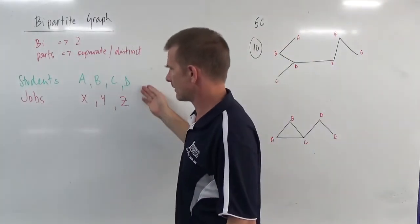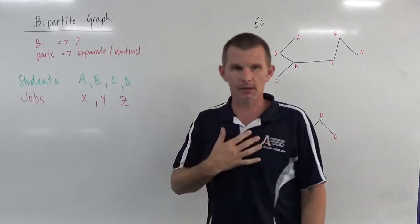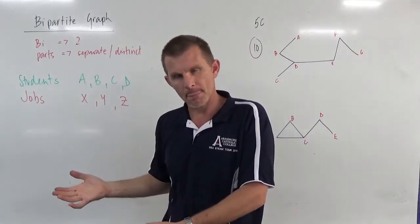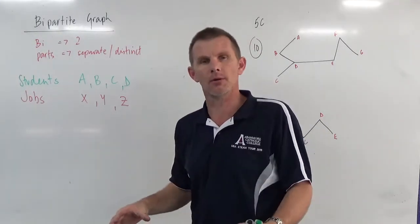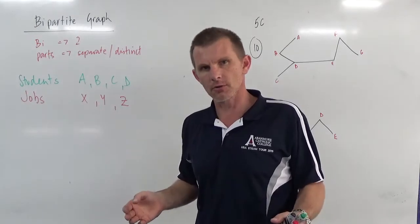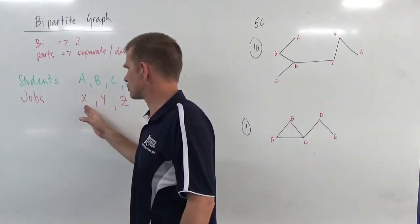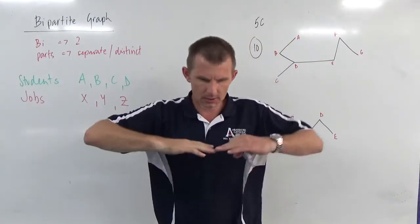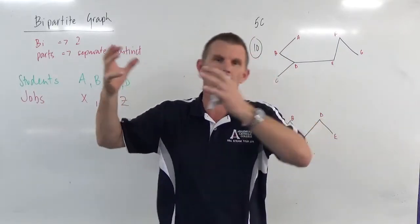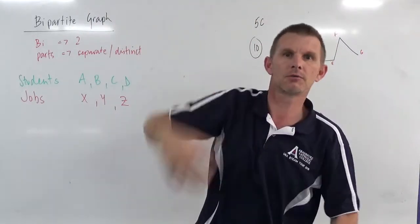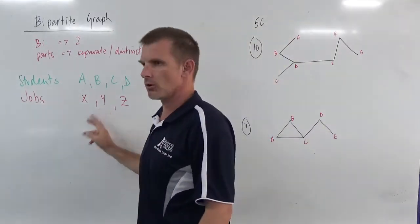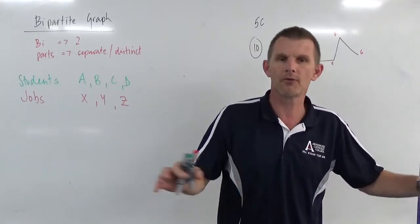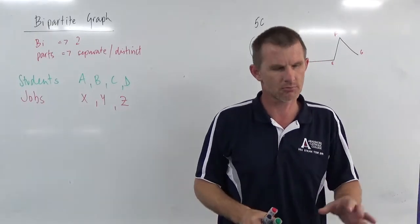Think about this example here: students and jobs. Let's say I've got four students in my class and three jobs that need to be done. Because of the skill level required for each job, not every student can do every job. Maybe job X is heading out to where the waste bins are — it's quite high, so you've got to be a reasonable height to lift the bin up and over. Maybe job Y needs a little bit of smarts, just a little bit above your pay grade.